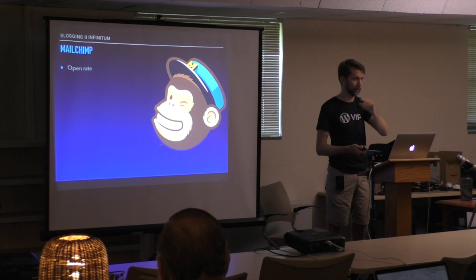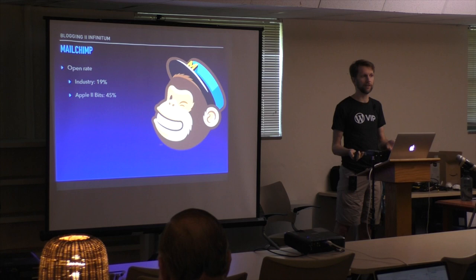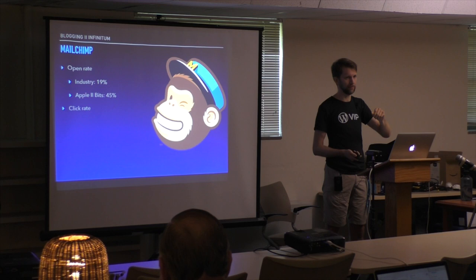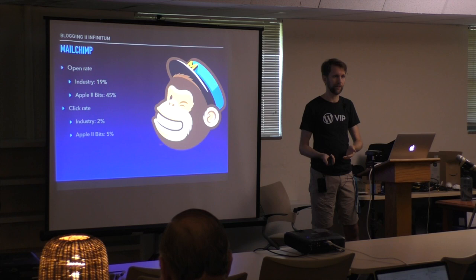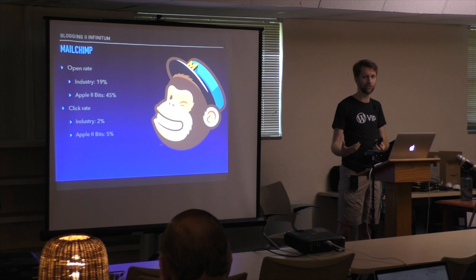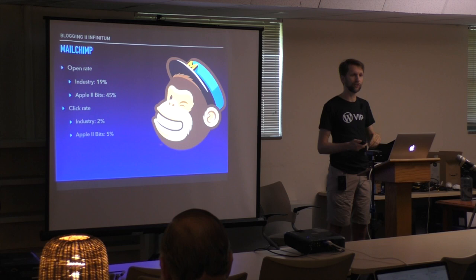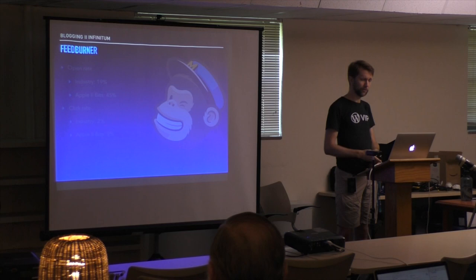MailChimp tracks an open rate — it can tell who actually opens the email in their inbox. In the computer and electronics industry, the average open rate in MailChimp is 19%. On my blog, it's 45%, because this is not commercial email — people specifically signed up to receive this content. The click rate — people who actually click a link in the email — has an industry average of only 2%, while Apple 2 Bits gets 5%, more than double. The click rate would probably be higher if I only sent the first paragraph and made them click through, but since my website doesn't have ads, I'm happy for them to read the content wherever is most convenient.